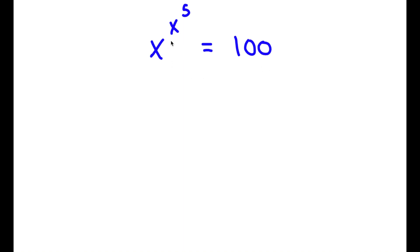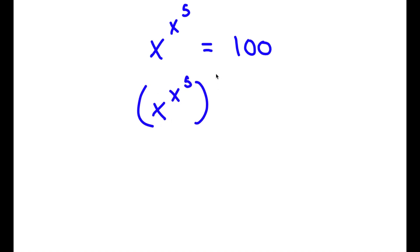Alright, so I have x to the power of x to the power of 5 is equal to 100. Now the first thing I'm going to do is take both sides to the power of 5. So now I have x to the power of x to the power of 5, all to the power of 5, is equal to 100 to the power of 5.